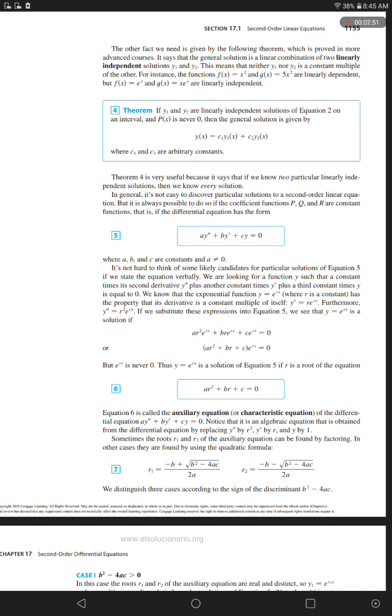has the property that its derivative is a constant multiple of itself. y prime equals r times e to the power rx. Furthermore, y double prime equals r squared times e to the power rx.